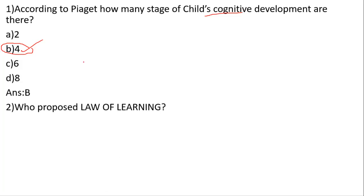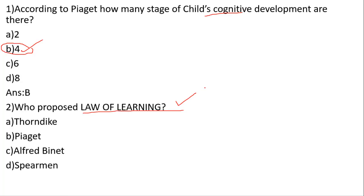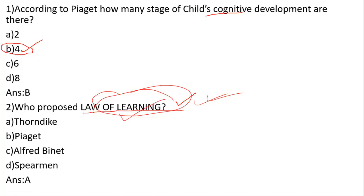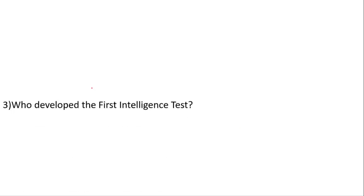Who proposed the law of learning? The options are: Thorndike, Piaget, Alfred Binet, Spearman. The correct answer is option A — E.L. Thorndike. Thorndike proposed the law of learning.